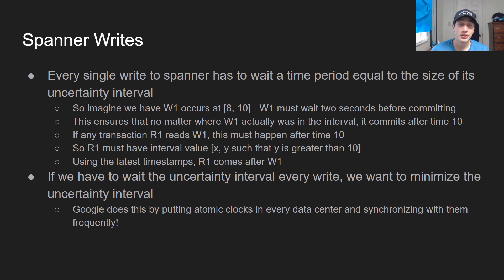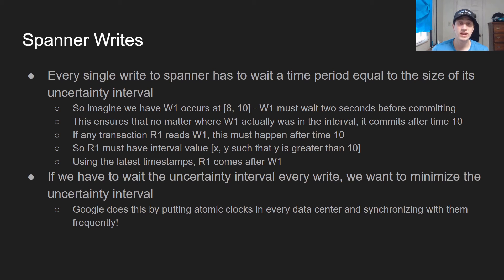Every single time we wait the uncertainty interval on writes, that greatly increases write latency. So the challenge for Spanner is to minimize the uncertainty interval as much as possible. Google addresses this with specialized hardware — they put atomic clocks in every single data center and synchronize them very frequently, approximately every 30 seconds. Compared to traditional clocks synchronizing over NTP with potentially unreliable servers, Google's specialized hardware design keeps those clocks as synchronized as humanly possible, achieving high throughput and lock-free reads.